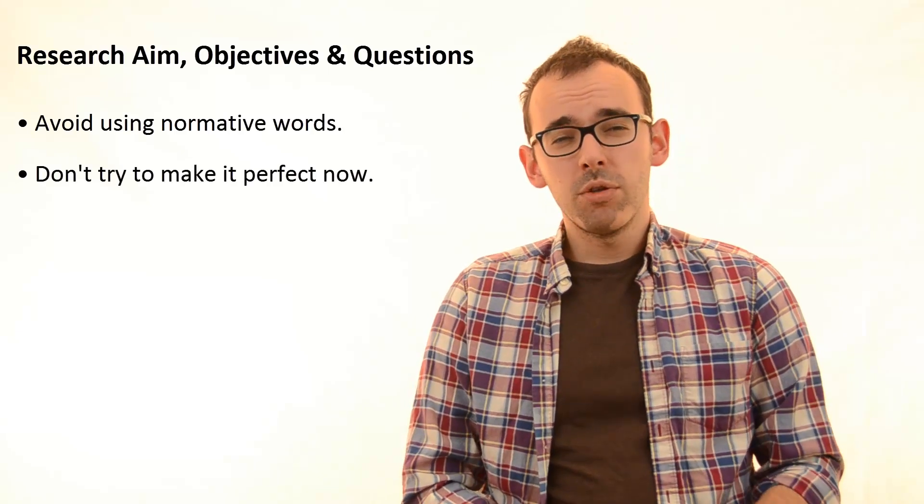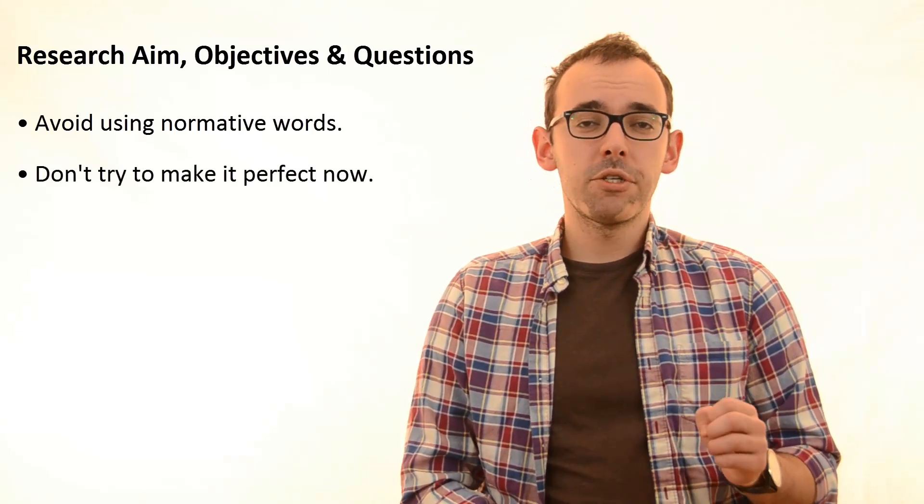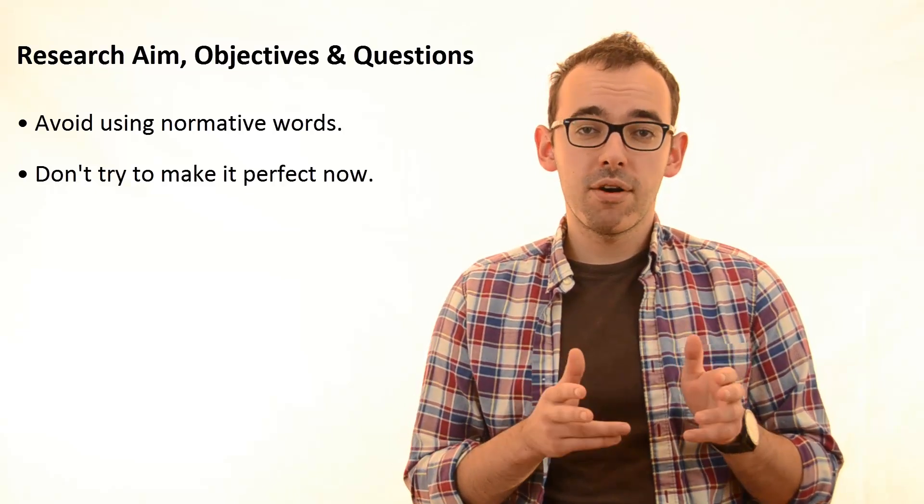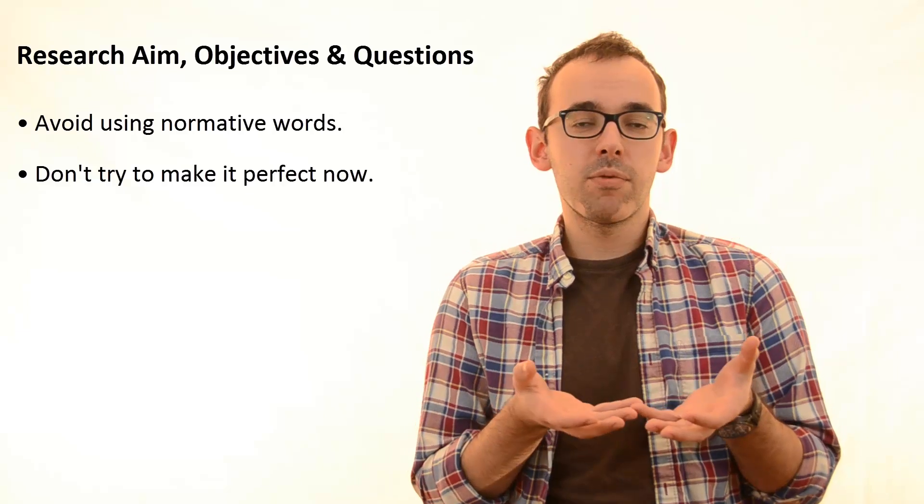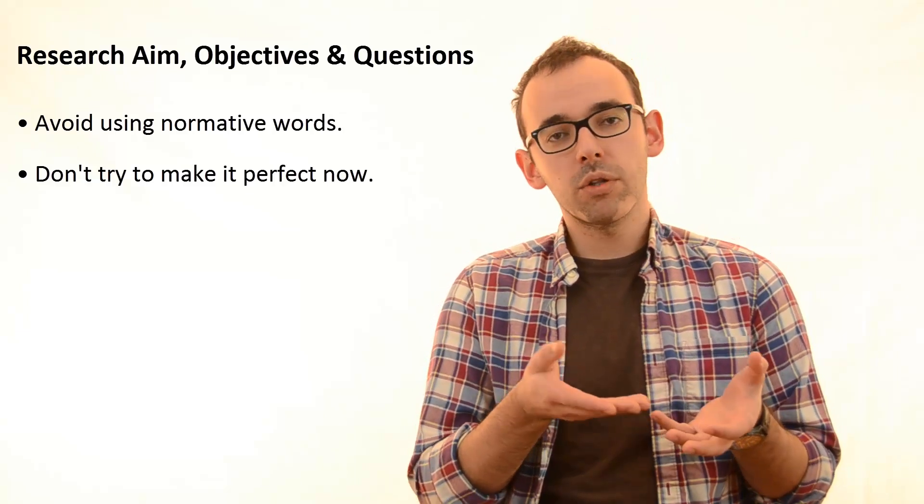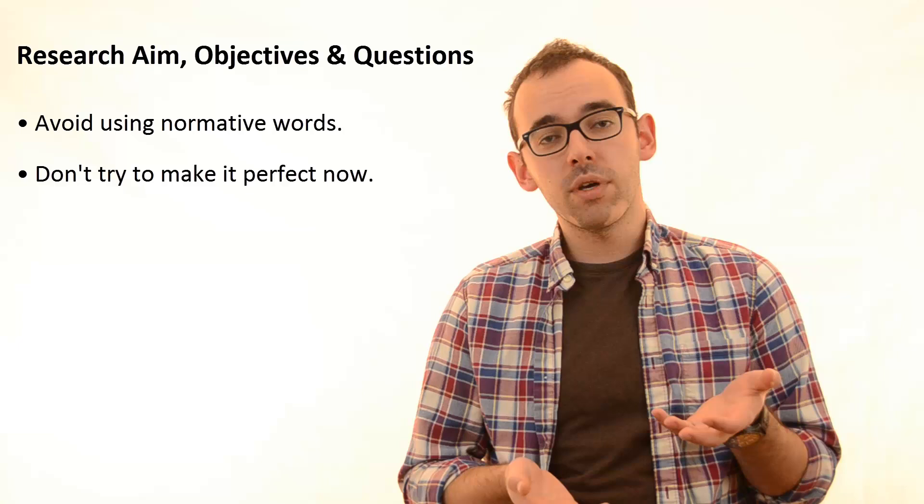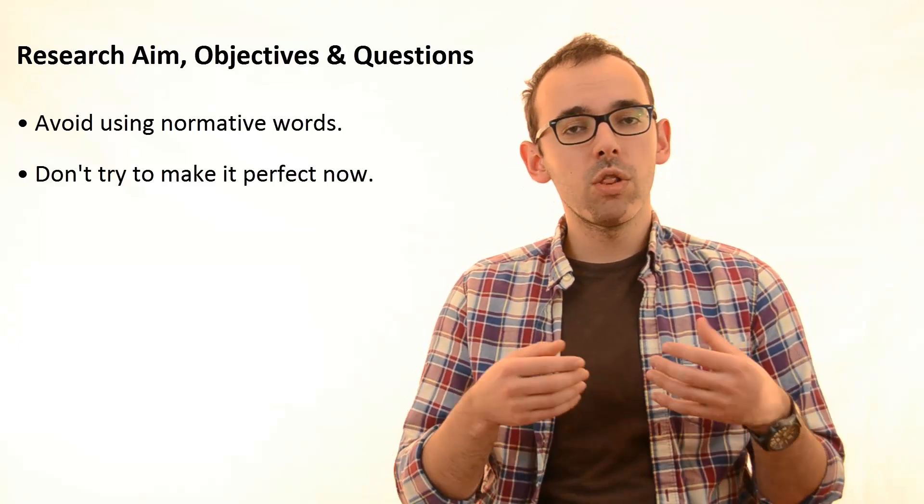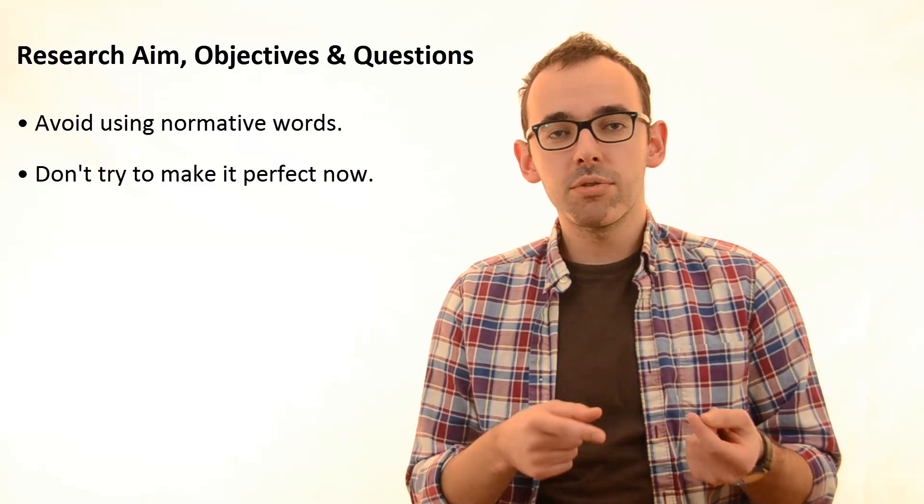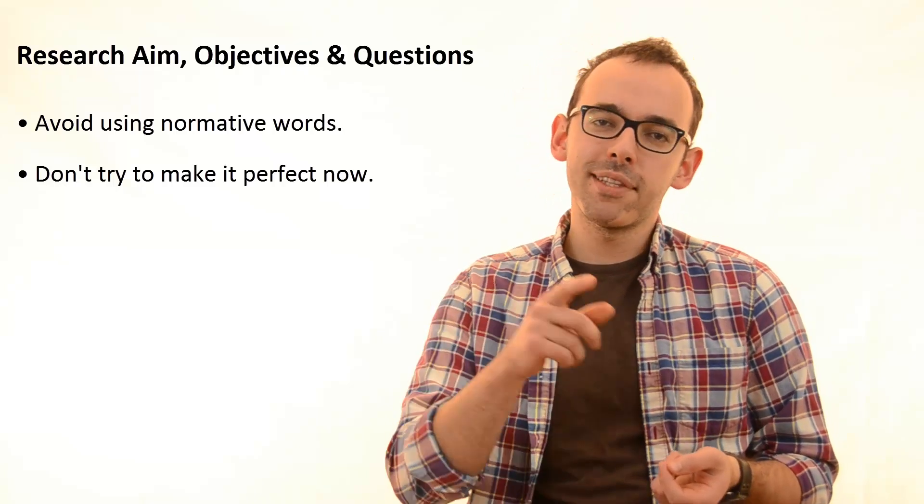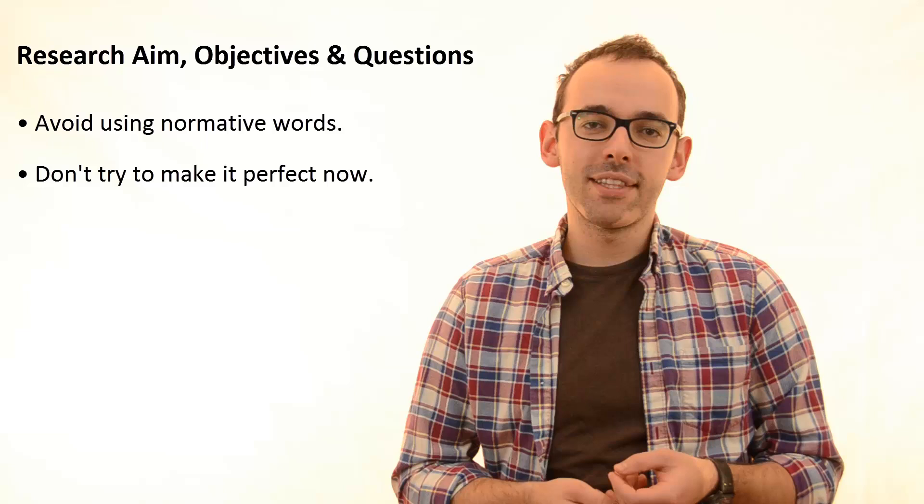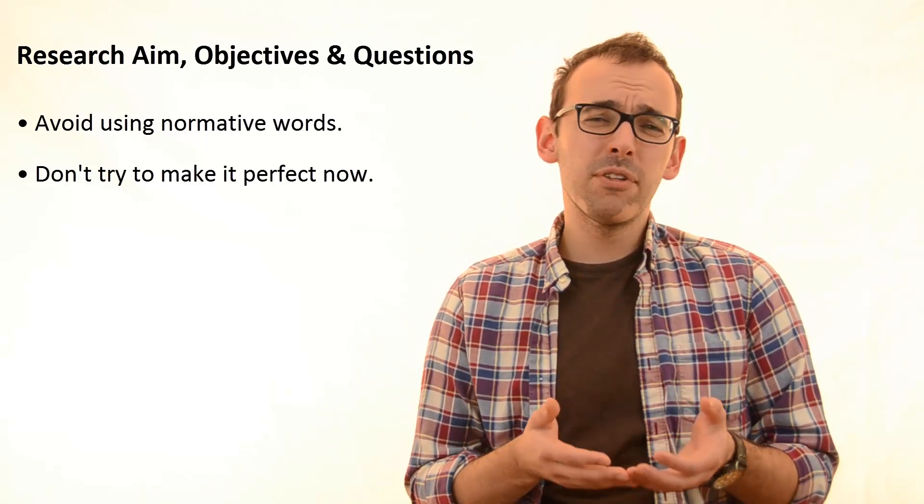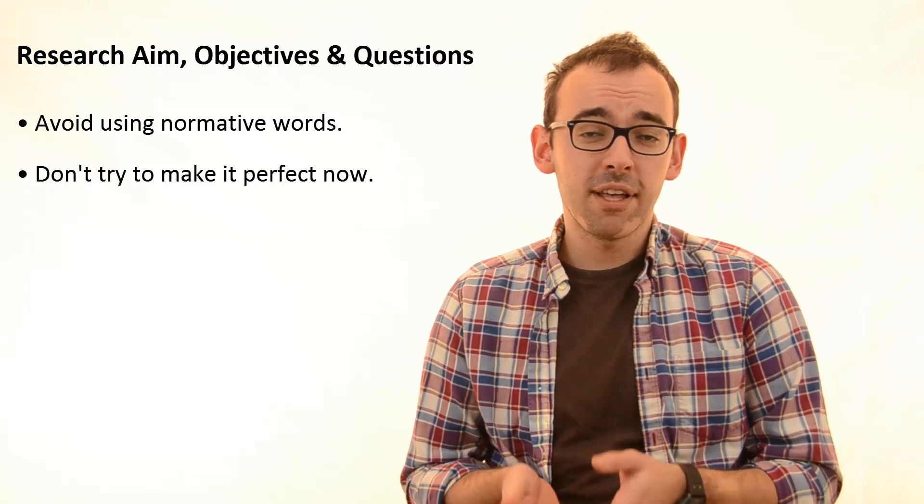Second of all, don't try to get your research aim into a perfect final state right now. Because we are in the very early beginnings of writing research and now we are going to construct a literature review, we are going to do some data collection. What will happen is you will have a lot of new ideas so that you will be reformulating your research aim later anyway. I mean, those will be just some minor changes. But still, if you will try to do it now, it will simply be a waste of time.